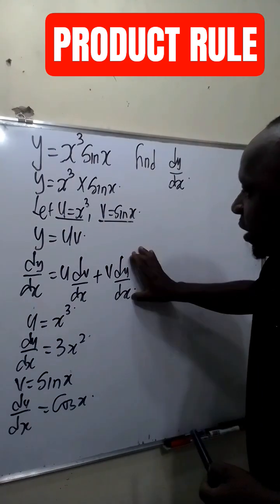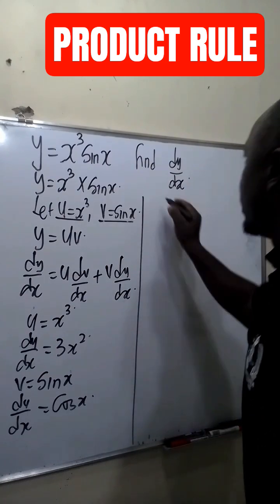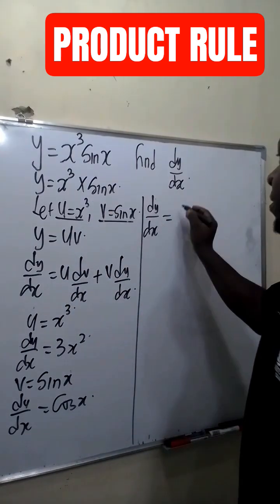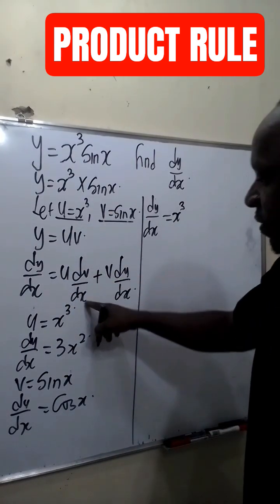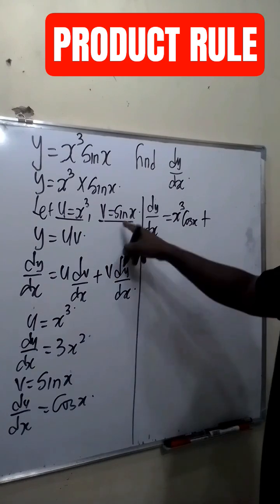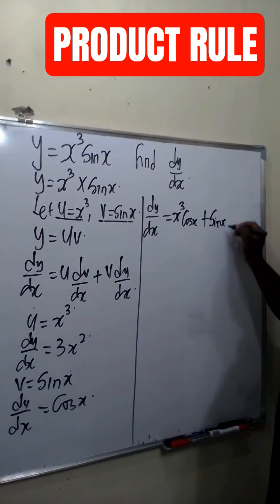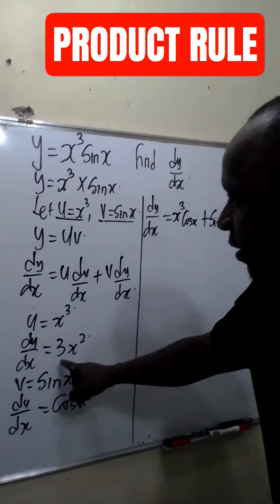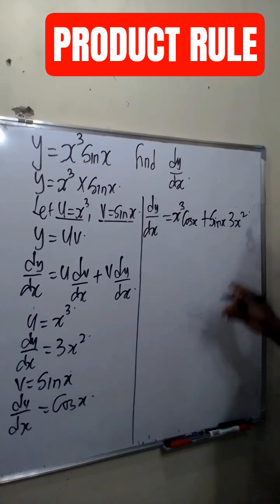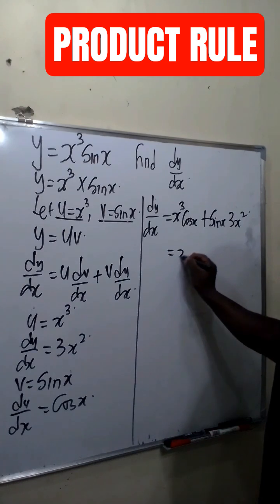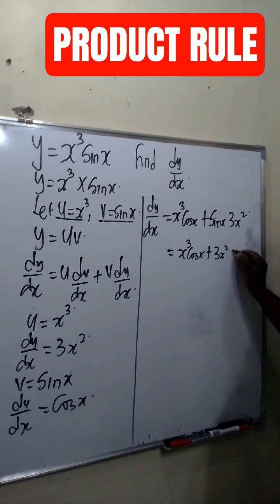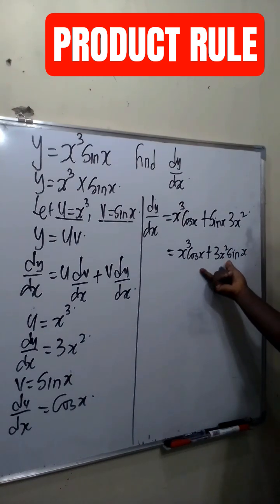Now we are going to input these two values into the equation. This implies dy/dx will be equal to u, which is x raised to the power 3, times dv/dx, which is cos x, plus v, which is sin x, times du/dx, which is 3x raised to the power 2. We can rearrange this to be x raised to the power 3 cos x plus 3x squared sin x.